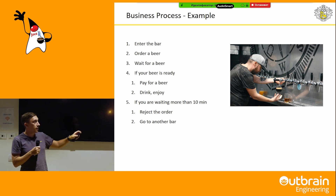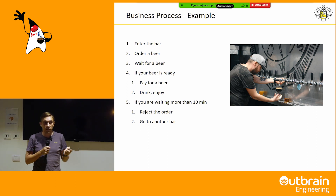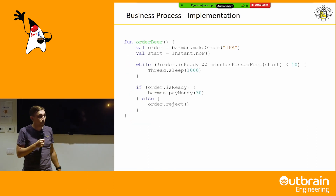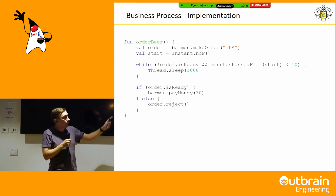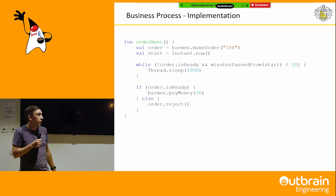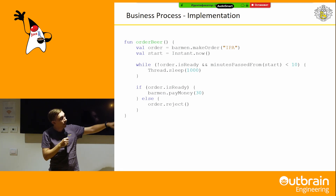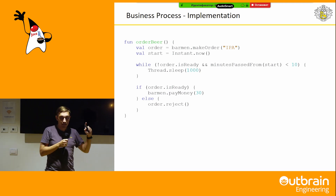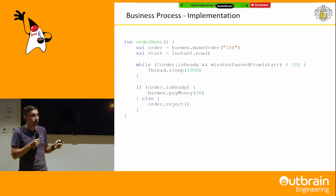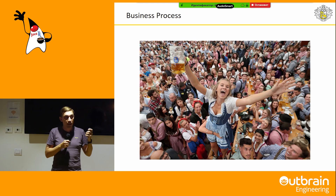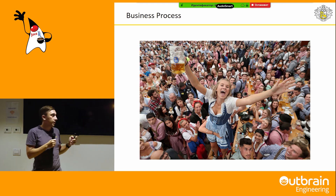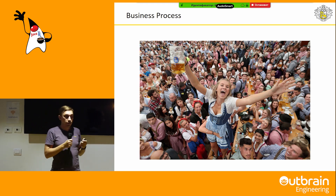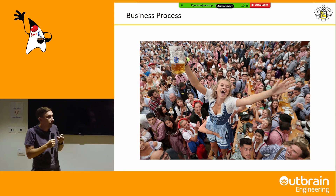Now let's try to implement this business process using pure code without any libraries. It's a Kotlin function which orders the beer and then waits in a blocking thread while the beer is ready. As a result, we pay for the beer or reject the order. But this solution has some issues — if we have a lot of orders, say during a beer festival, we will have a lot of blocking threads which just wait and do nothing.